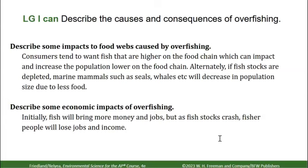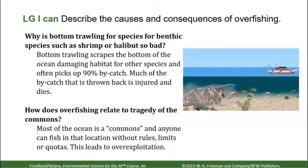Overfishing has several impacts on food webs. Consumers tend to want fish higher on the food chain, like tuna and cod, and removing them can increase populations of species lower on the food chain. Conversely, if fish stocks are depleted, marine mammals like seals and whales will decrease in population due to less food. Economically, overfishing initially brings more money and jobs, but as fish stocks crash, fishers lose their jobs and income.